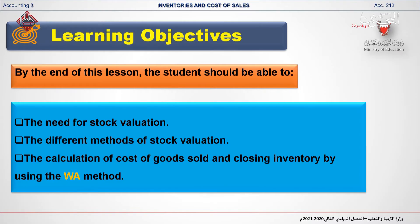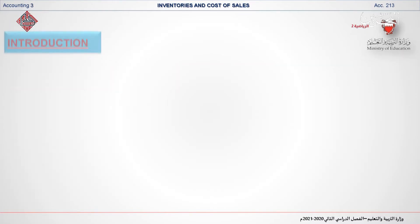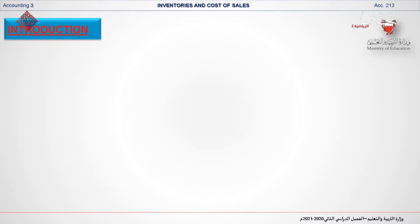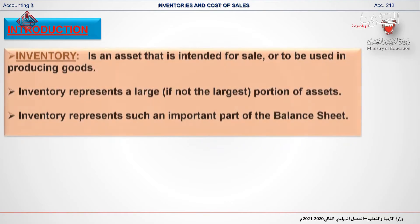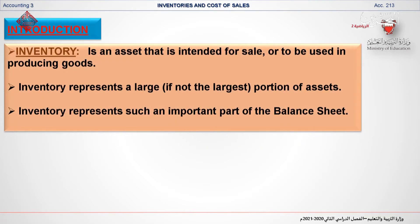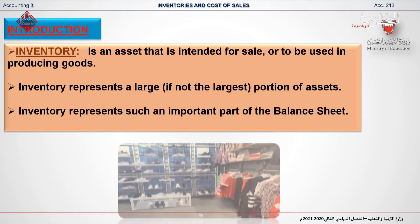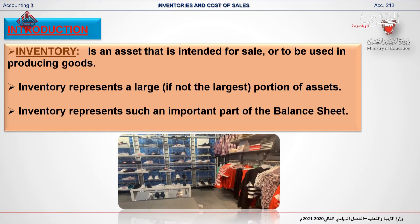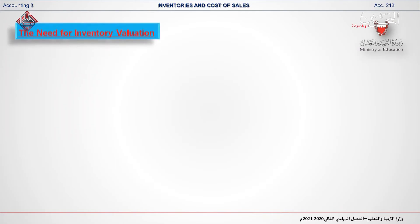First I will remind you of main points we explained last lesson. You need to know what the word inventory means. Inventory is an asset that is intended for sale or to be used in producing goods. For many companies, inventory represents a large, if not the largest, portion of assets in the balance sheet. This is the need for inventory valuation.